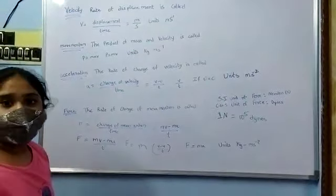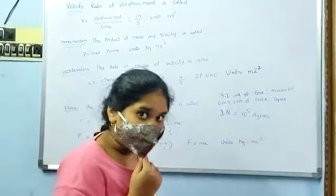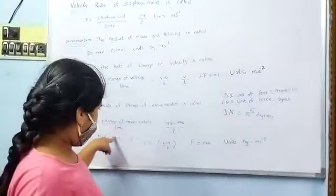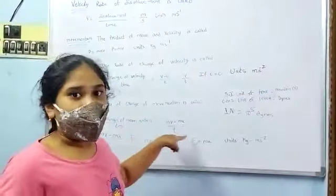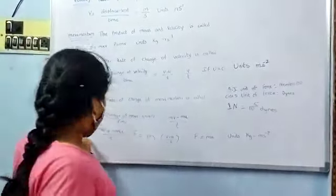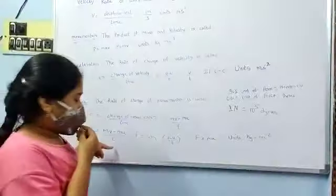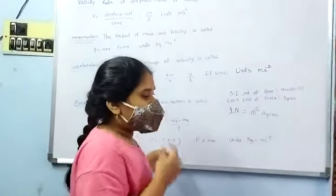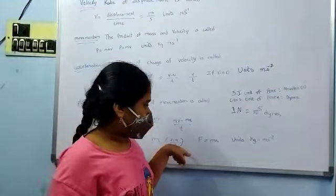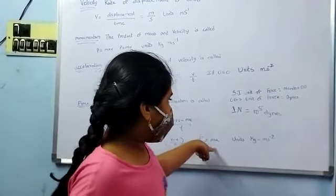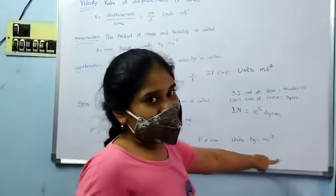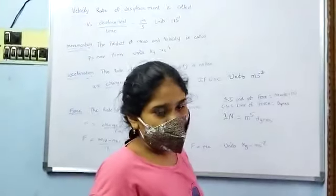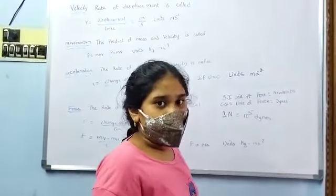Force. The rate of change of momentum is called force. F is equal to change of momentum by time, equal to mv minus mu by t. F is equal to m times v minus u by t, so F is equal to ma. SI unit of force: kg meter per second squared. CGS unit of force.